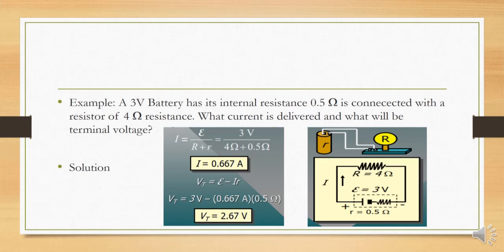This becomes 3 over 4.5. By calculating, we get the current of 0.667 amperes passing through the closed circuit. Now using the terminal potential equation from the previous slide: Vt equals EMF minus I·r. So Vt equals 3 volts minus 0.667 amperes multiplied by the internal resistance of 0.5 ohms. After calculation, we get the terminal potential of 2.67 volts.